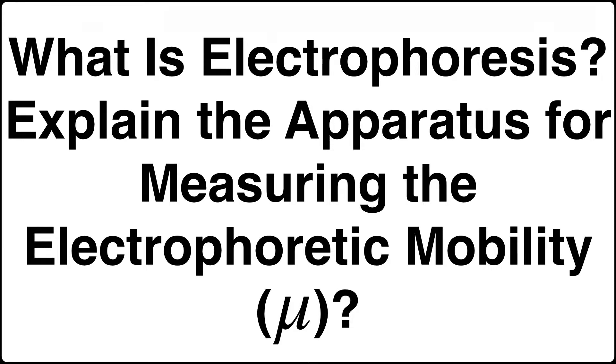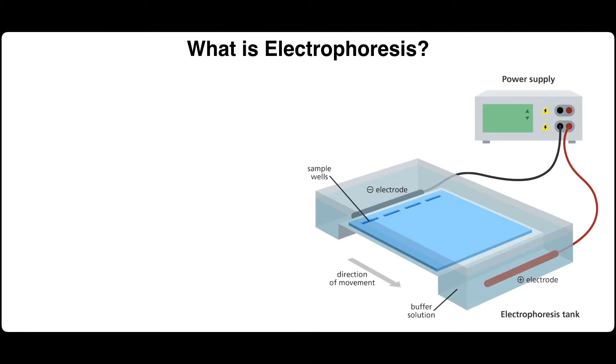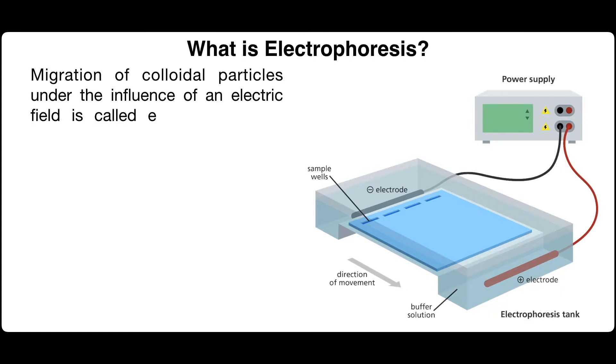What is electrophoresis? Explain the apparatus for measuring the electrophoretic mobility. Migration of colloidal particles under the influence of an electric field is called electrophoresis or cataphoresis.